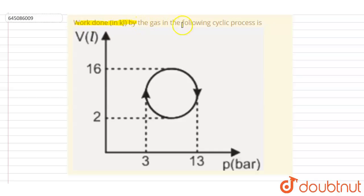So if you see, this is a cyclic process. If I talk about the work done in case of cyclic process, we know that the work done is nothing but area under PV curve. But here it is VP curve. But since it is a cyclic process, whether you calculate this area or you calculate this area, both will be the same because it is a circle.